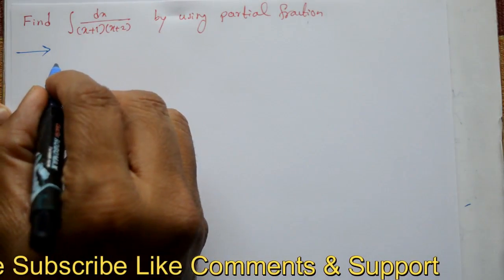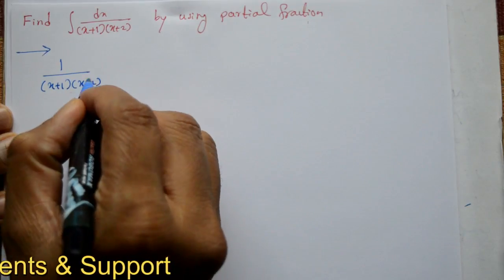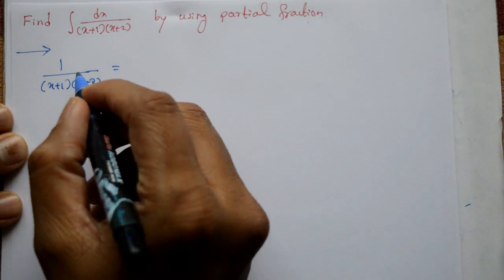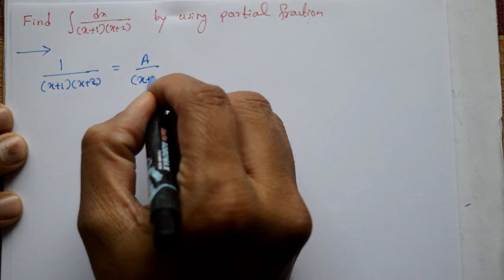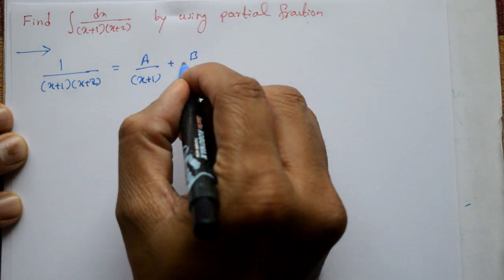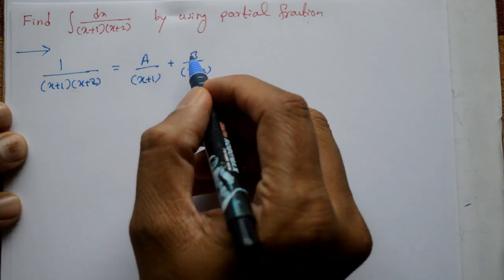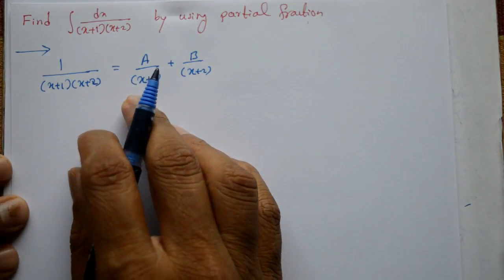Now, sirf is part ko lenge haam, 1 by (x+1) into (x+2), ye part lekeke solve karena hai. By using partial fraction, so 1/[(x+1)(x+2)] = A/(x+1) + B/(x+2). Hamko kya chahiye, A and B value ko find karke integration kya to hamko solution mil jayega.